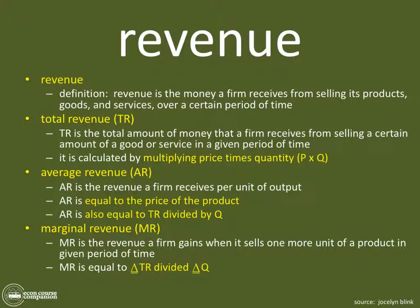All right, there are only four terms — one general term and then three subterms. The first term is just revenue in general. Revenue is the money a firm receives from selling its products, goods, and services over a certain period of time. It's simply the money that comes in for the purchase of a good. When you go up to a store and buy something and hand them money, that money is the revenue. What the firm then hopes is that the costs of making it are less than the revenue, and then they'll make a profit. So revenue is just the money firms receive.